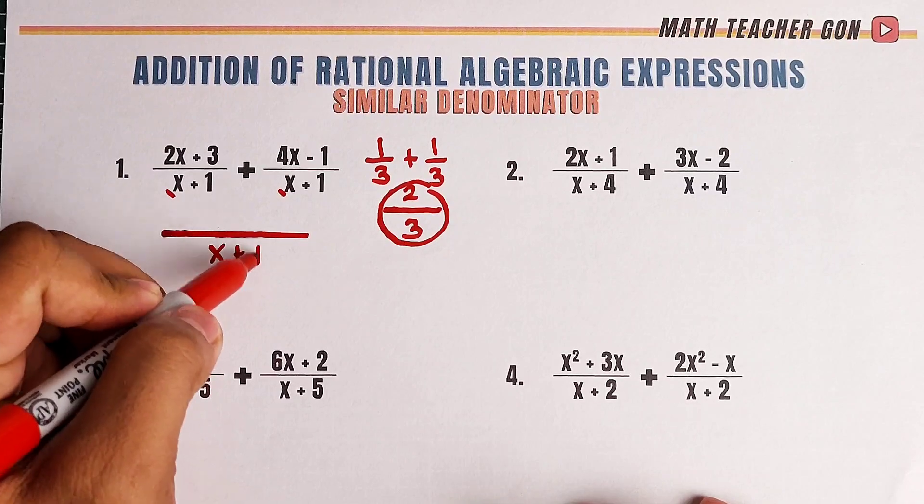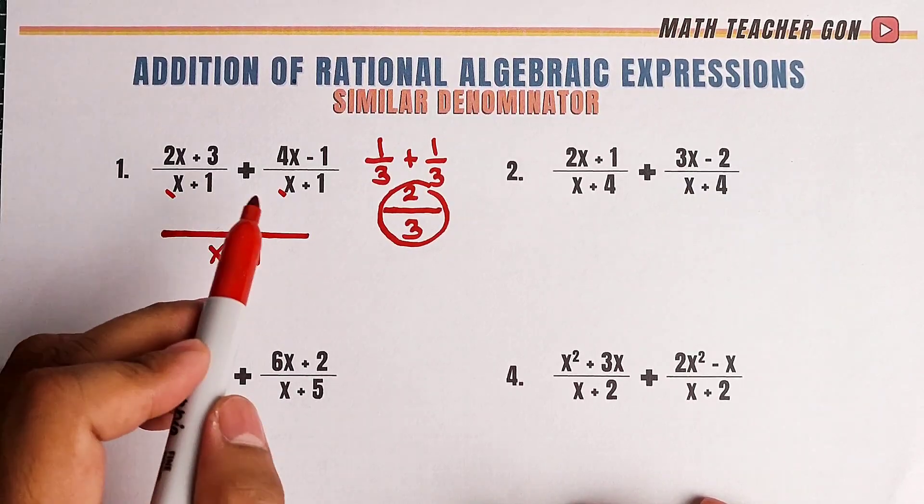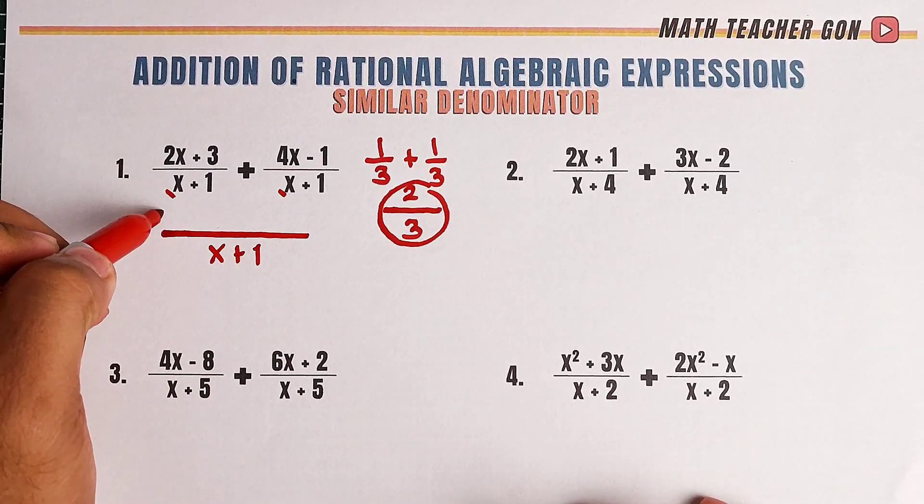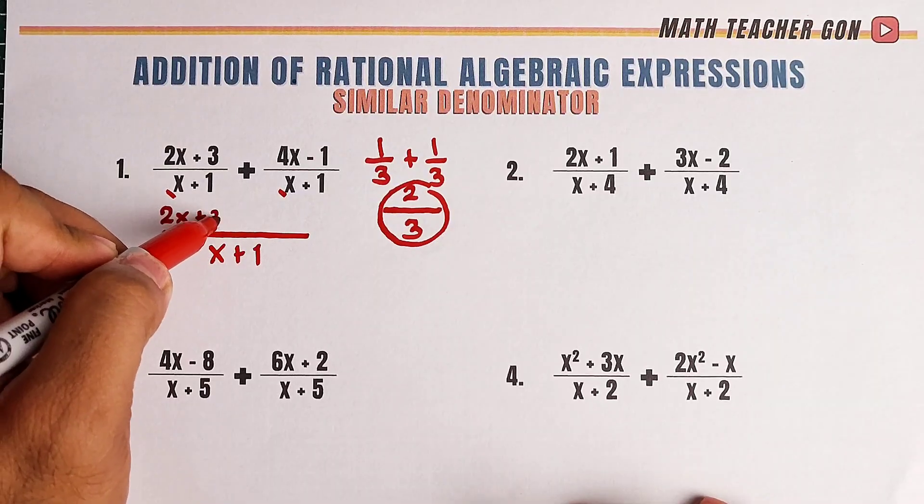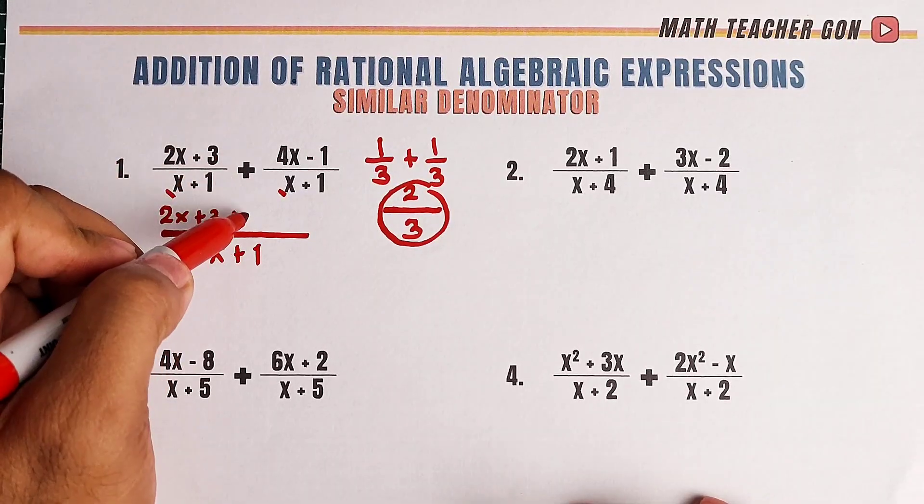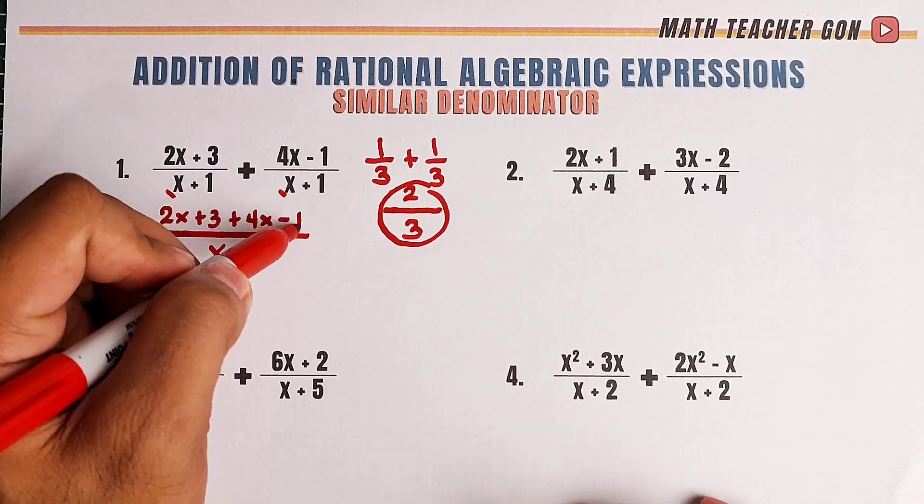We have x plus 1, then we will add the numerators. We will put it here, 2x plus 3 plus 4x minus 1.